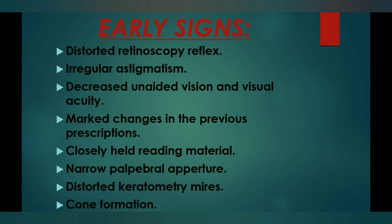Another early sign is that the patient holds reading material very closely to see clearly. A narrow palpebral aperture is seen — the palpebral aperture is the opening of the eye and it becomes narrow. Distorted keratometry mires are also seen, and cone formation is present, as keratoconus means conical cornea.